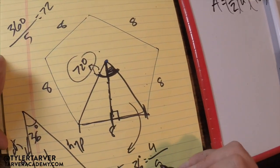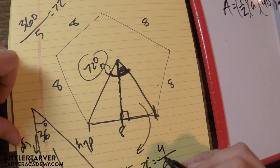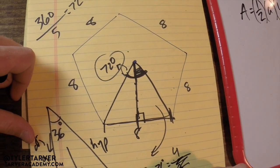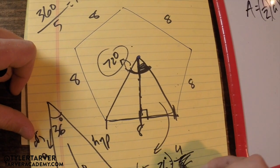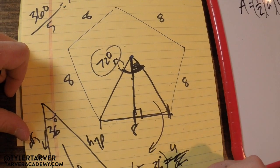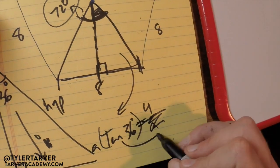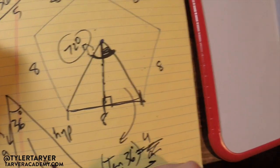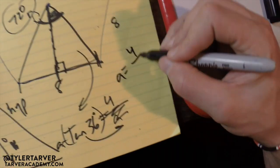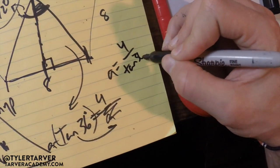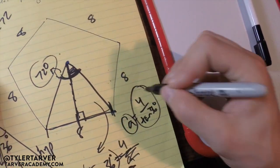Okay, then all we do is we multiply both sides by a to get rid of this, because we want to get a by itself. So we multiply it, so that it would be a times tangent 36 equals 4. And then we just get the tangent 36 over here, and since it's being multiplied, we have to divide it. So a equals 4 divided by tangent 36 degrees. Now we have our apothem.